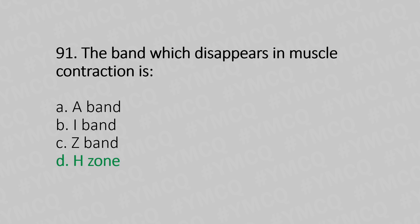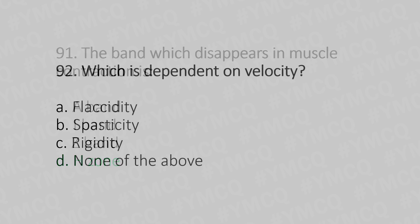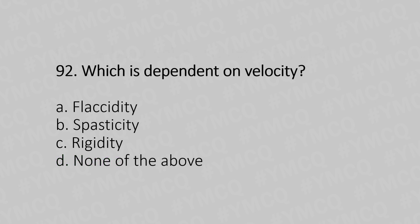Question 92: Which is dependent on velocity? Option A: flaccidity; option B: spasticity; option C: rigidity; option D: none of the above. The answer is option B: spasticity.